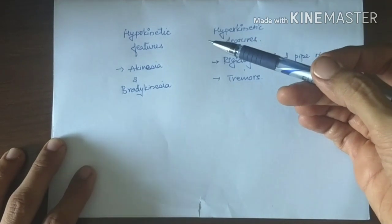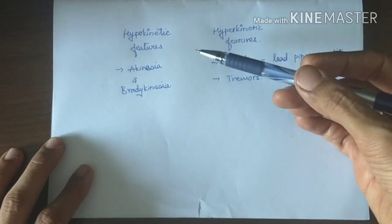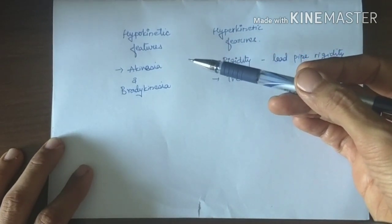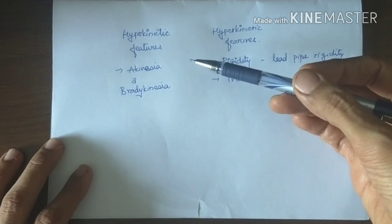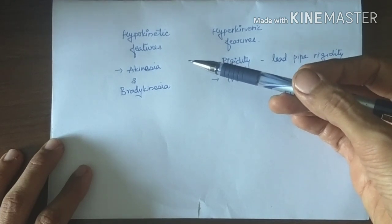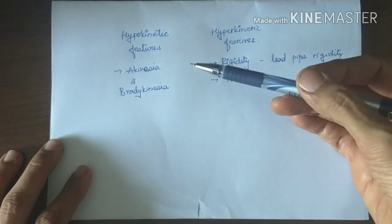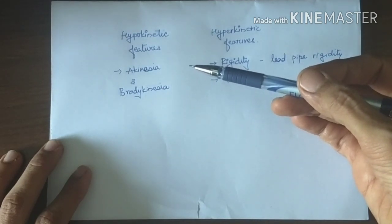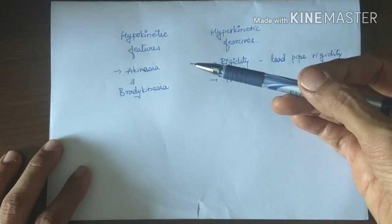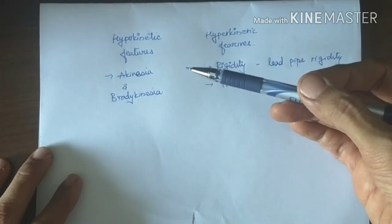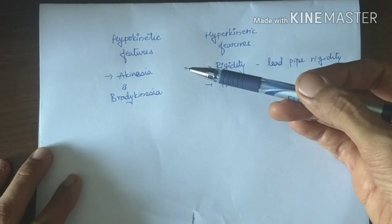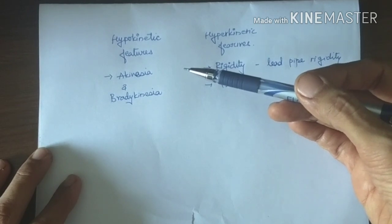Hypokinetic features are akinesia and bradykinesia. Hyperkinetic features are rigidity and tremors. There is absence of motor activity and difficulty in initiating voluntary movements. There is decrease in automatic associated movements, for example swinging of arms during walking, facial expressions related to emotional content of thought as well as speech.